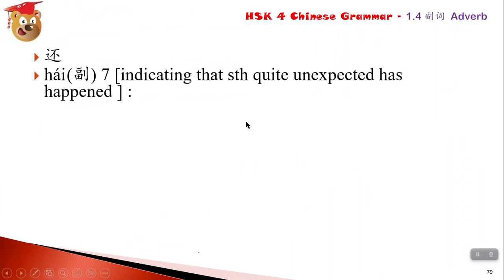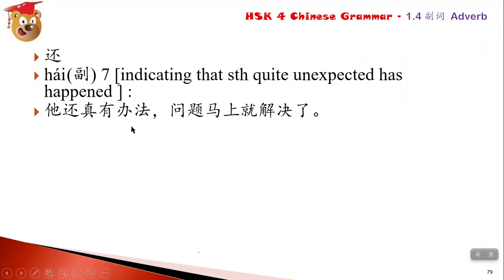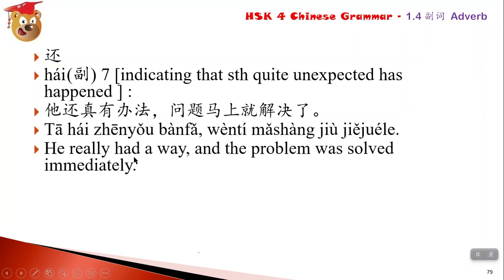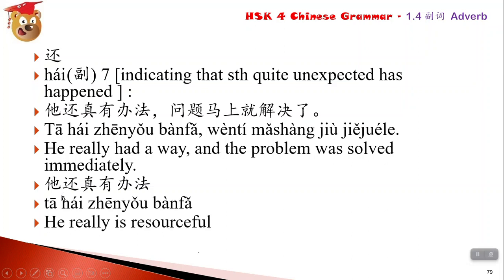还 is used to indicate something quite unexpected. For example: 他还真有办法，问题马上解决了 - he really had a way, and the problem was solved immediately. 还真有办法 means he is really resourceful and truly has some methods or solutions.